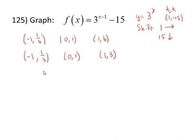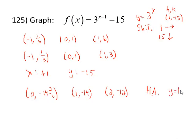Shifting by 1 in the positive x direction means to add 1 to each x value, and shifting down by 15 means to subtract 15 from each y value. That's going to give us the point (0, -14⅔), (1, -14), and (2, -12). Also keep in mind that the horizontal asymptote is at y equals k which for us will be y equals negative 15. The domain is the set of all real numbers, and the range starts at negative 15, not including negative 15, and goes to infinity.